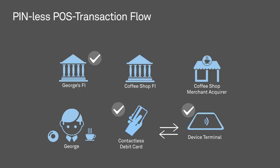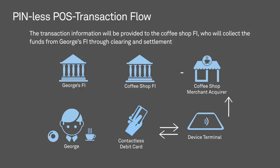If the requirements were not met, the transaction would be declined. Since the payment is approved, transaction information is generated by the merchant's terminal and the details are stored by the coffee shop — which, in technical terms, is the merchant acquirer in the transaction. This transaction information will be provided to the coffee shop's FI, who will later use it to reconcile the payment and collect the funds from George's FI through the process known as clearing and settlement.